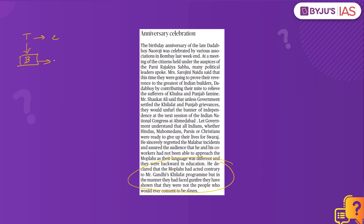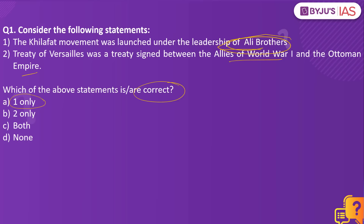The Khilafat movement was launched under the leadership of the Ali brothers, which included Maulana Muhammad Ali and Muhammad Shaukat Ali. It also included Maulana Azad, Hakim Ajmal Khan, and Hazrat Mohani. They went against the British with the support of Mahatma Gandhi to persuade the British government not to abolish the Caliphate.